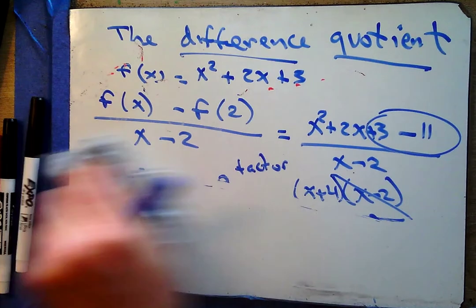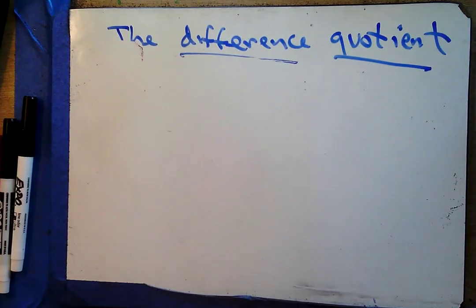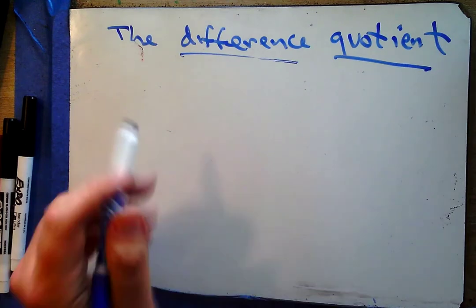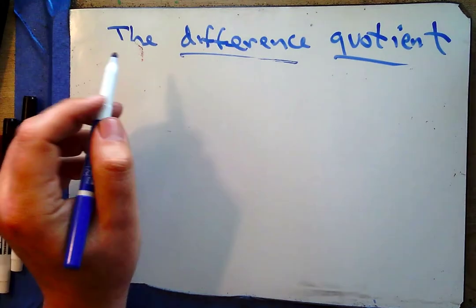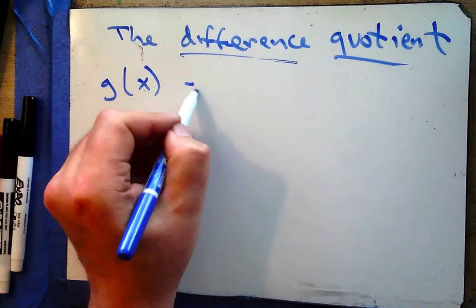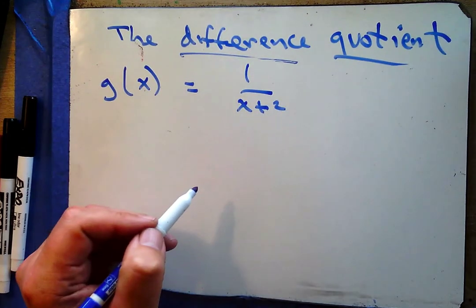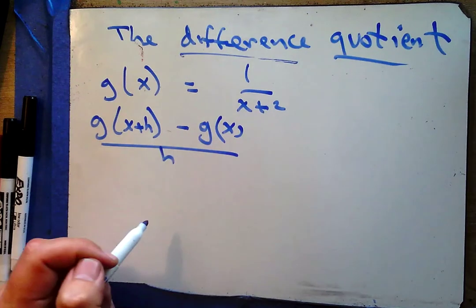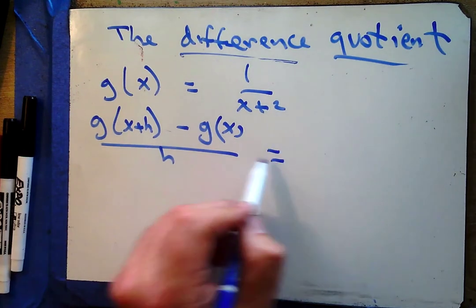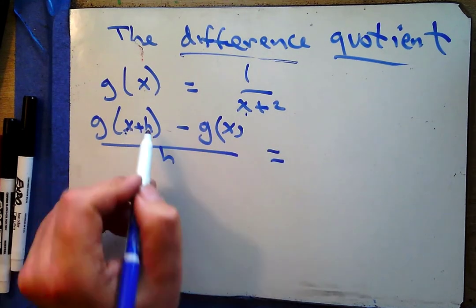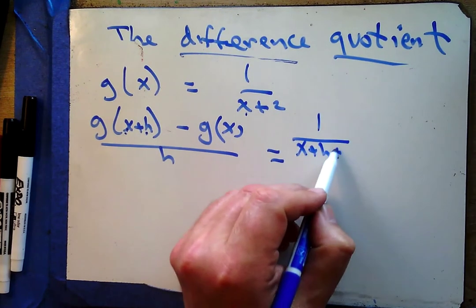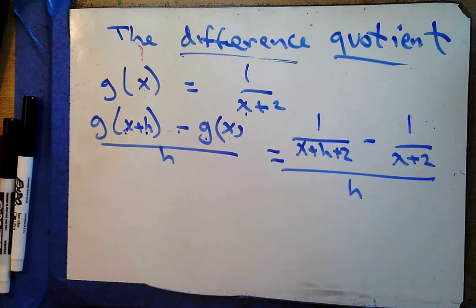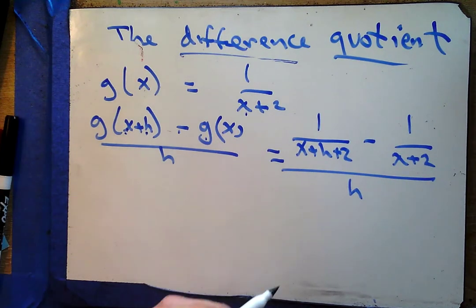Now let's try g(x) = 1/(x+2). I'd like to find [g(x+h) − g(x)] / h. To find g(x+h), replace x with (x+h): that's 1/(x+h+2). So we have [1/(x+h+2) − 1/(x+2)] / h. This is a complex fraction — that's exactly why we practiced complex fractions, because this was coming and we needed to be ready for it.